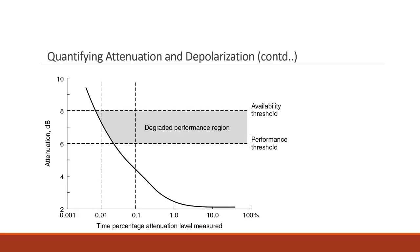Attenuation is measured in decibels (dB). As the signal travels from one place to another, its strength reduces. This graph shows the availability threshold and performance threshold. If attenuation is between 6 and 8 dB, the link is in the degraded performance region. Beyond 8 dB, an outage has occurred and it is not acceptable. Between 0 and 6 dB is acceptable. Only 0.1% of time — including degraded performance and outage — is allowable; for 99.9% the link must be available.